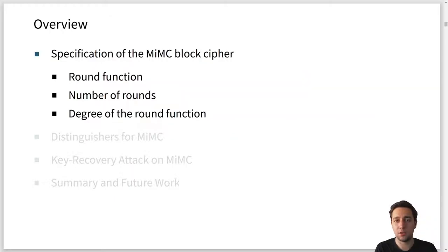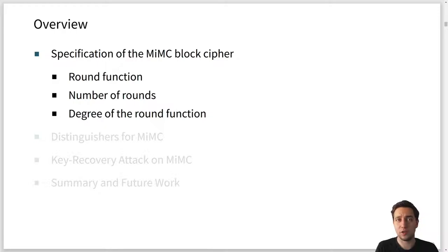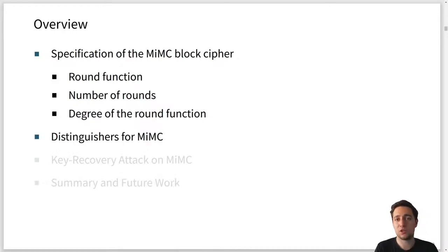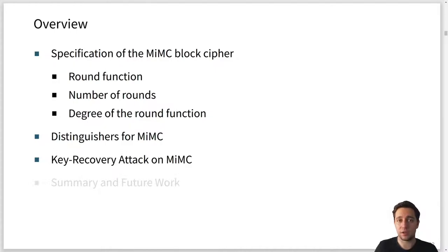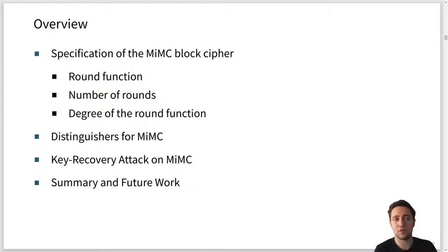What will be the outline of this presentation? First I'll give the specification of the MiMC block cipher, which is basically a way to build the block cipher from the MiMC construction. I will then talk about the round function and the number of rounds, and also give the degree of the round function — this is one of the key properties we exploit. After giving some details about MiMC, I will talk about distinguishers for this construction and then the key recovery attack. Finally, I will give a short summary and some questions for future work.